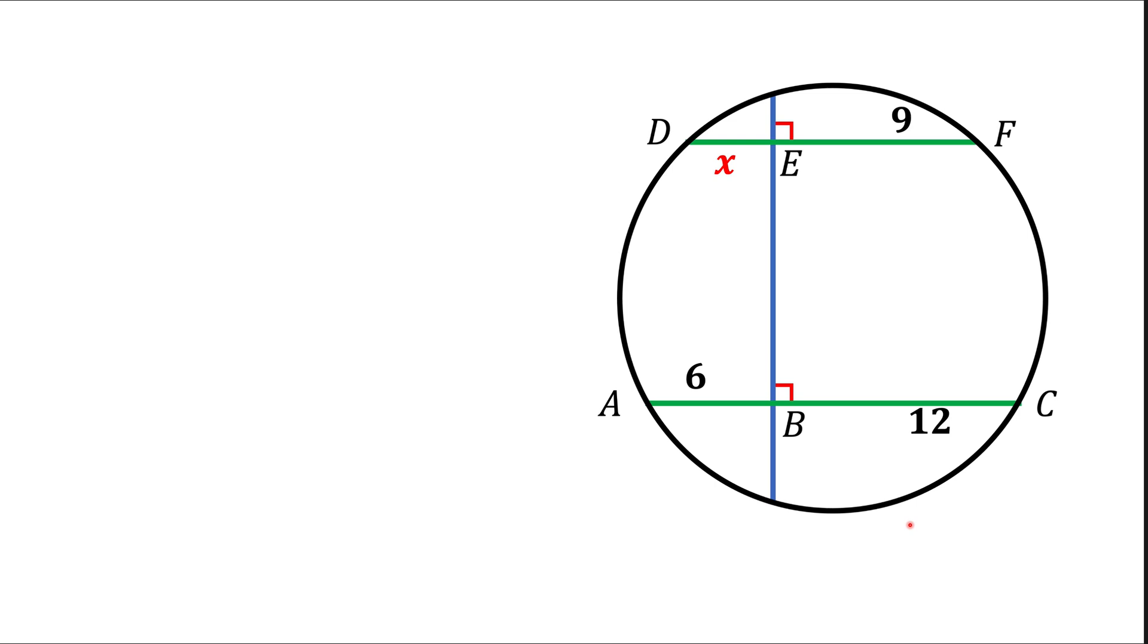Here we have a circle and two green chords that go horizontal parallel to each other, AC and DF, and we have a third blue chord EB that goes at 90 degrees to the green chords. Now that blue chord intersects the green chords at points E and B.